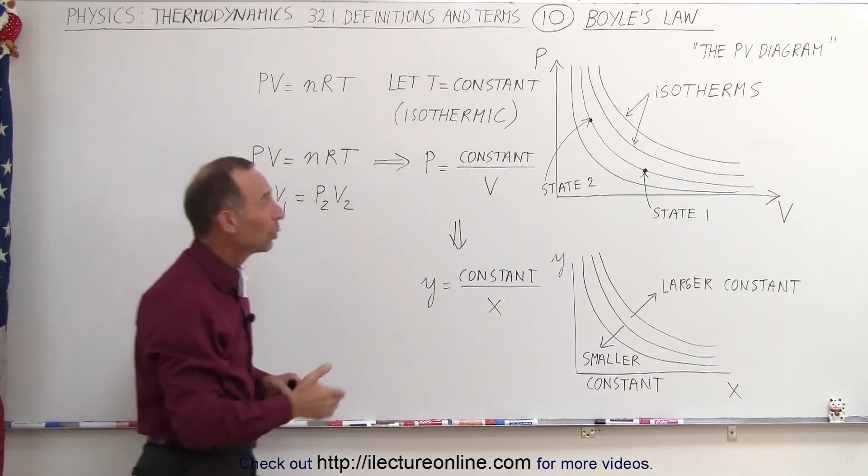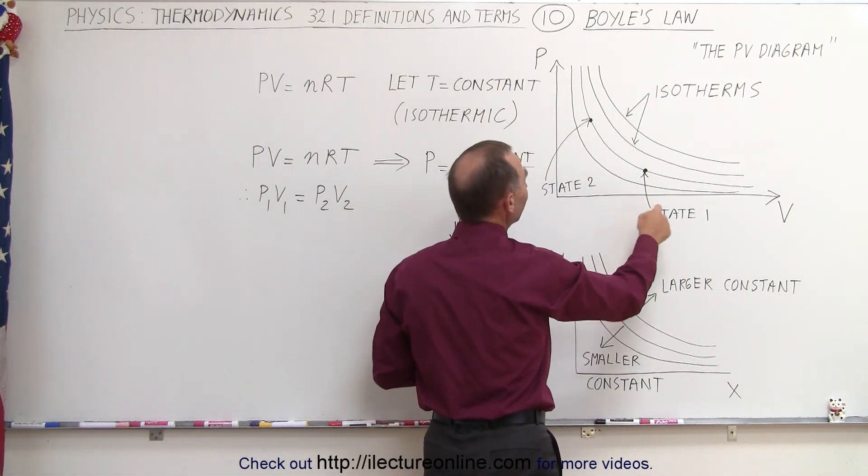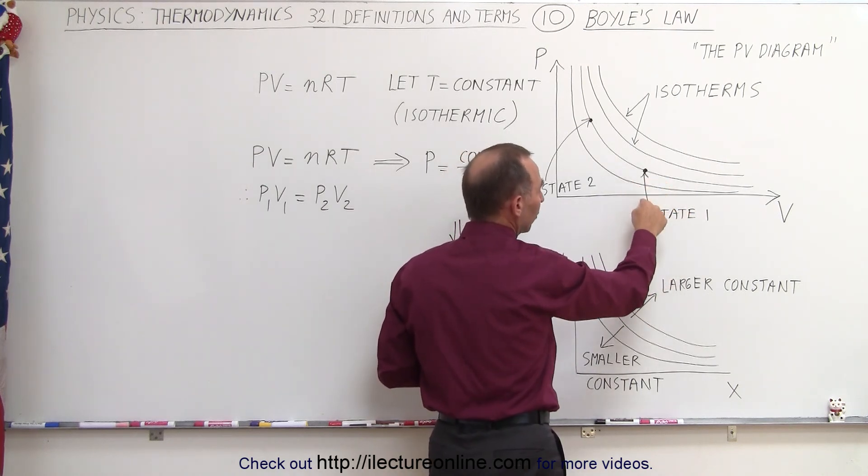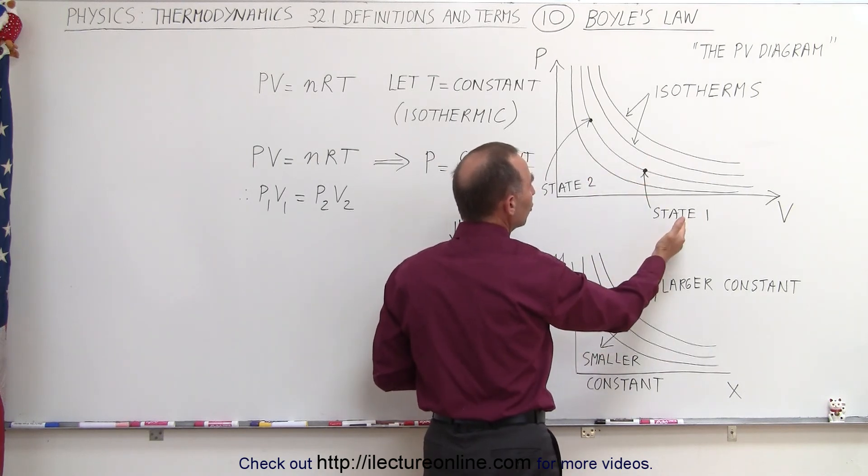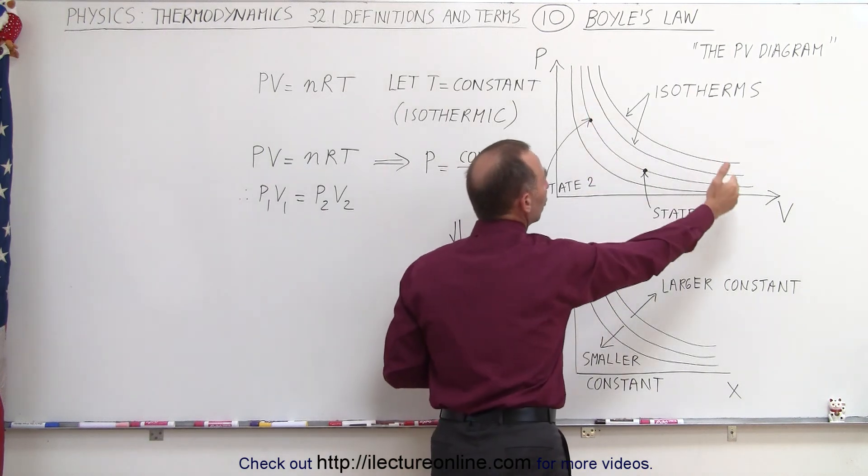So when we come over here and we look at these isotherms, and we'll see in a moment what that all means is that let's say we're in a particular state right here where we have a certain pressure right here and a certain volume right there. If then we change the state by increasing the pressure, notice that will require the volume to decrease.